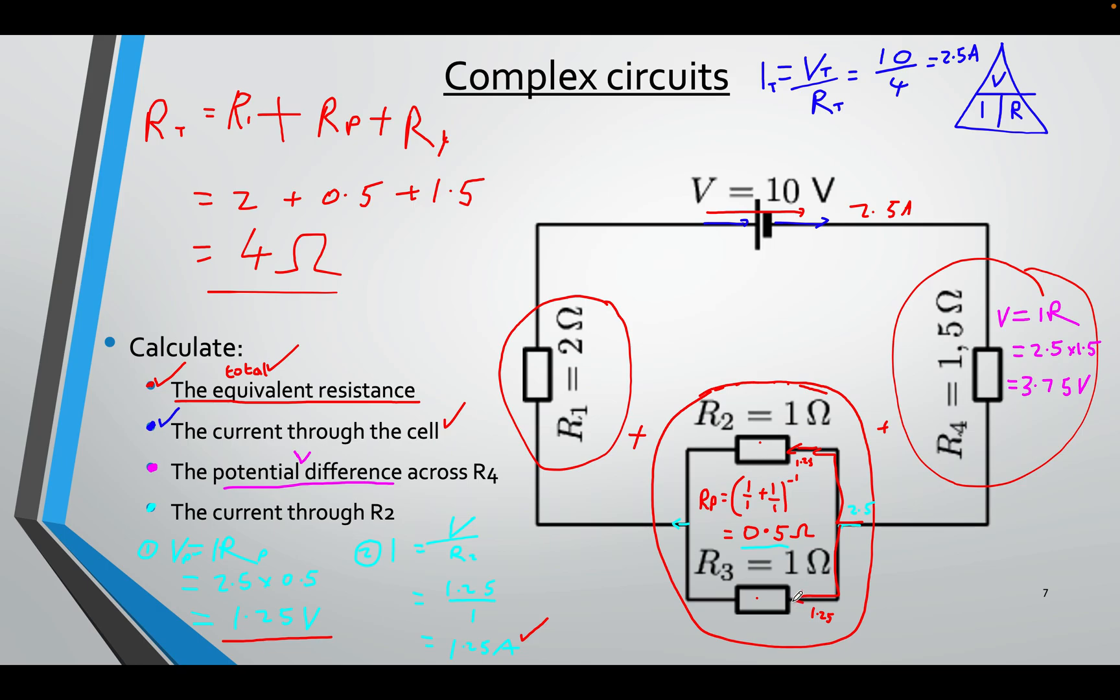You may have already noticed that 1.25 is actually half of 2.5, which kind of makes sense. Well, it does make sense, because we know that these two resistors are equal, so the current will be split equally. Half will go up, and half will go down. So half of 2.5, of course, is 1.25. So you can skip the calculation if they are equal. You just half it. But if the numbers are different, then of course, it's better to use the calculation, and you will get the correct answer.